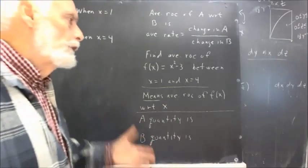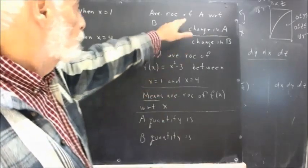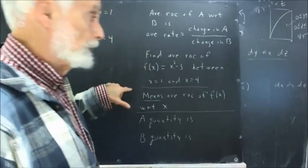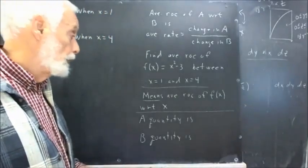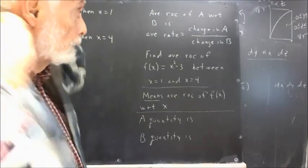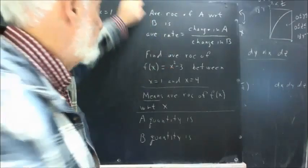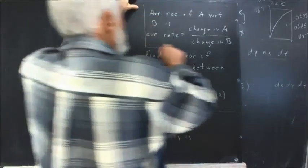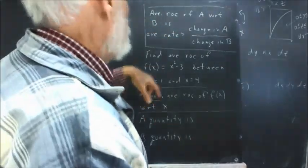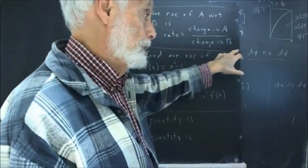The sixth problem involves finding the average rate of change of one quantity with respect to another. It's not always stated that way, so let's think about what this means. The average rate of change of A with respect to B is defined as the average rate equal to change in A divided by change in B — not A over B, but the change in A divided by the change in B.